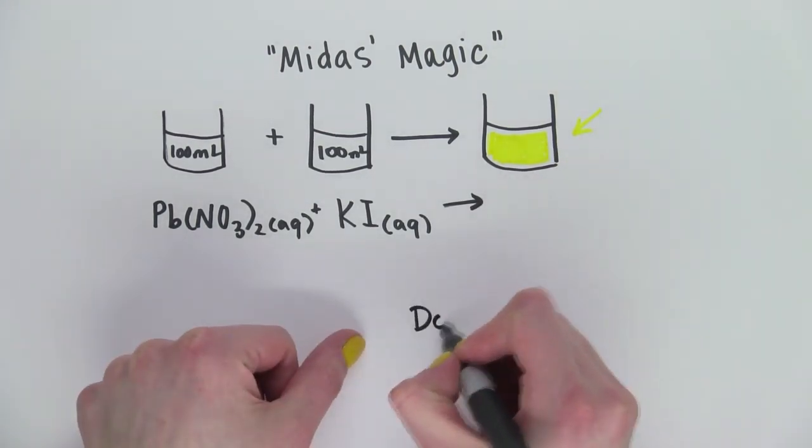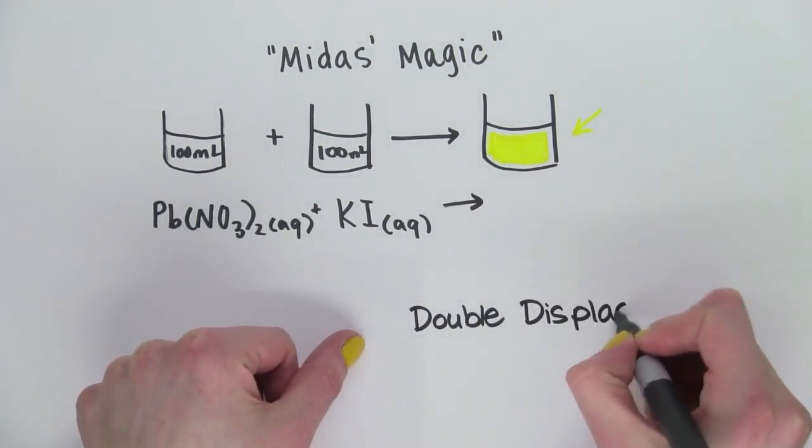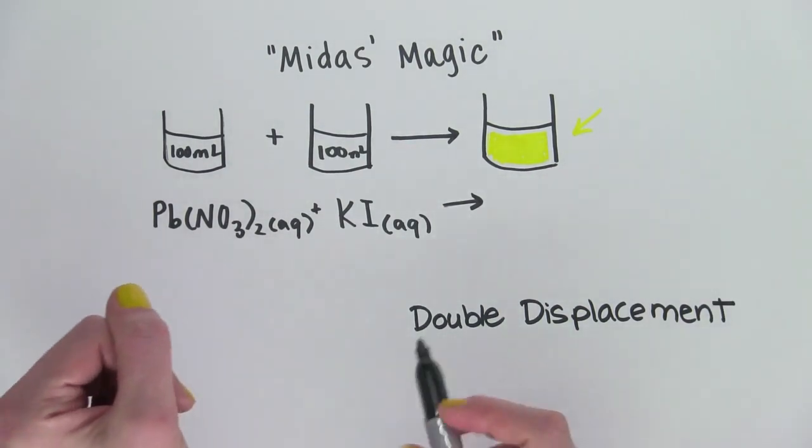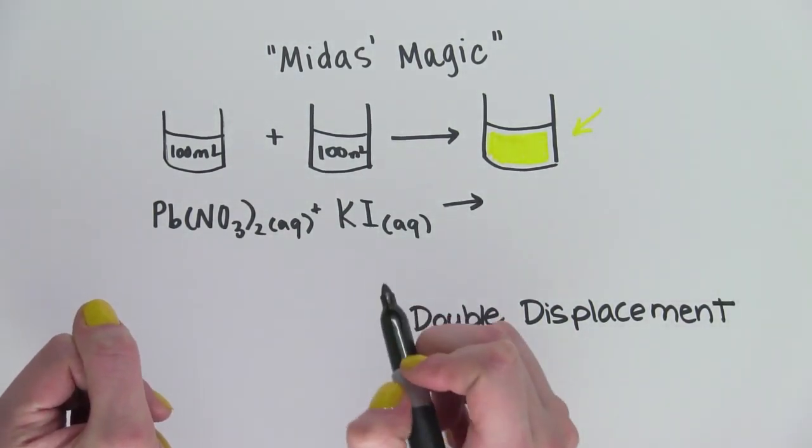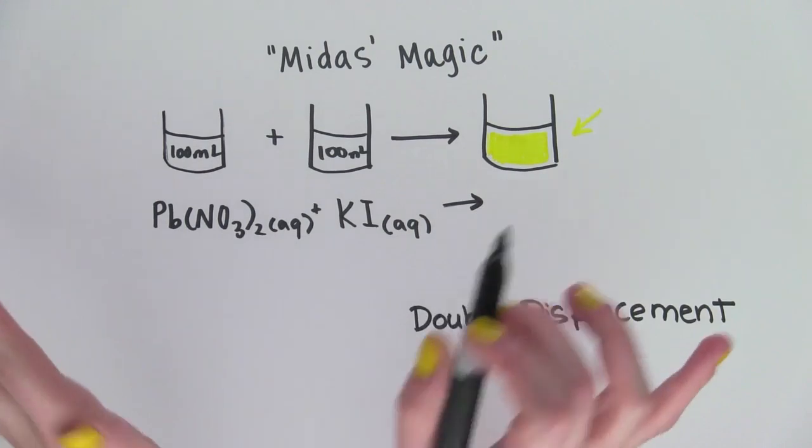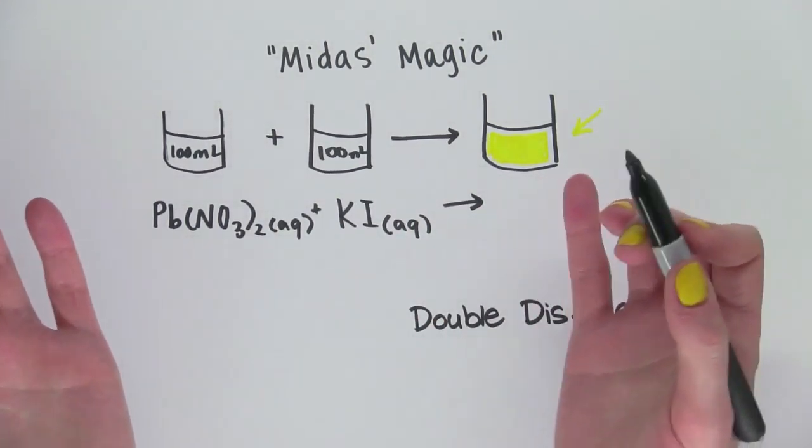Well, this is a reaction that's called a double displacement reaction. And in this kind of reaction, the cation and anion pairs switch places. So what exactly does that mean? I'm going to use some colors to help me out.